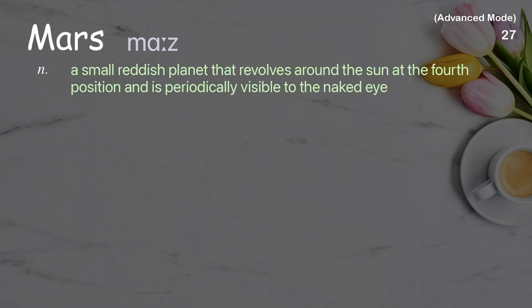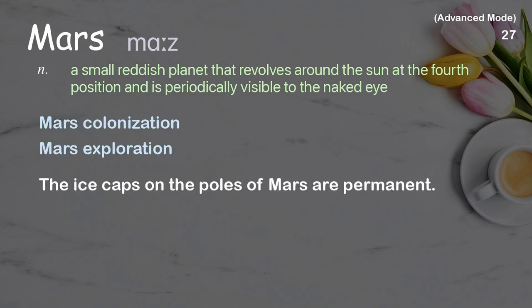Mars: a small reddish planet that revolves around the sun at the fourth position and is periodically visible to the naked eye. Examples: Mars colonization, Mars exploration. The ice caps on the poles of Mars are permanent.